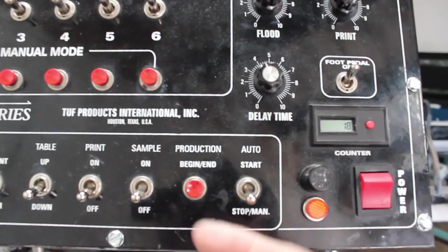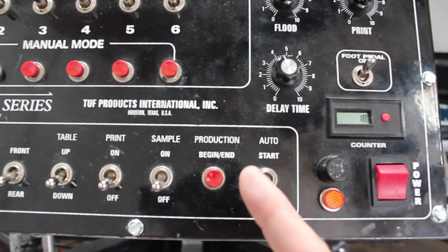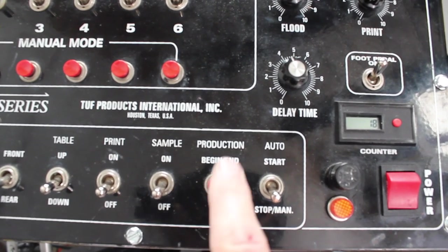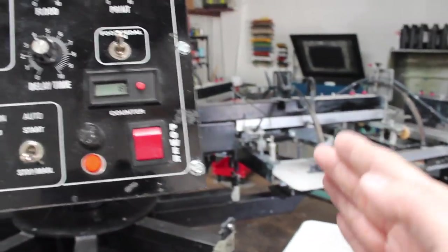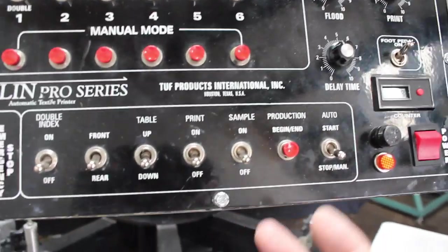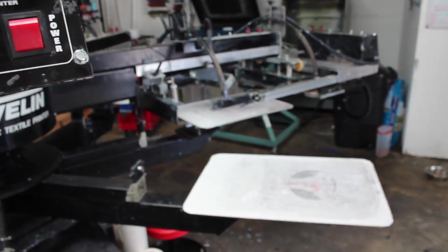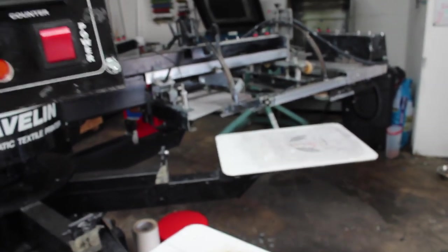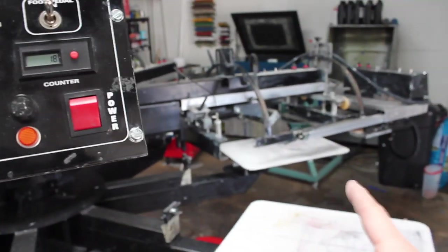This is your auto start/stop manual button. When you're ready to start printing shirts, you'll flip this button on and hold. As soon as you flip this on, within three seconds you want to hold the Begin Production button here. What that will do is turn on each head in sequence, almost like the sample mode, but it will keep going and the press will continue to print shirts.